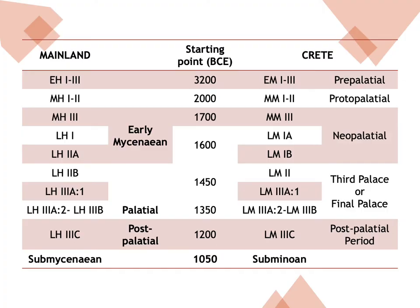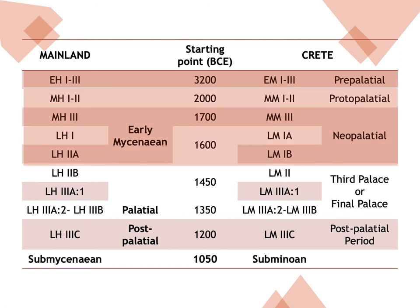Let's turn to our trusty chronological chart. So far we have covered the EBA for all three geographical denominations, as well as the period of the Middle and the early part of the Late Bronze Age, again for all three denominations, but in two parts — first for Crete, and then for the mainland and Cyclades. In today's lecture we're going to go all the way from 1450 BCE down to 1200 BCE.